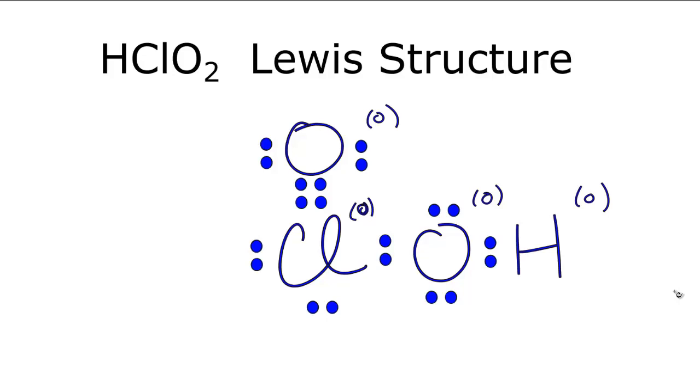and that often when we have oxygens and hydrogens together like this, the hydrogen will be connected to one of the oxygens. This is Dr. B with the Lewis structure for HClO2, and thanks for watching.